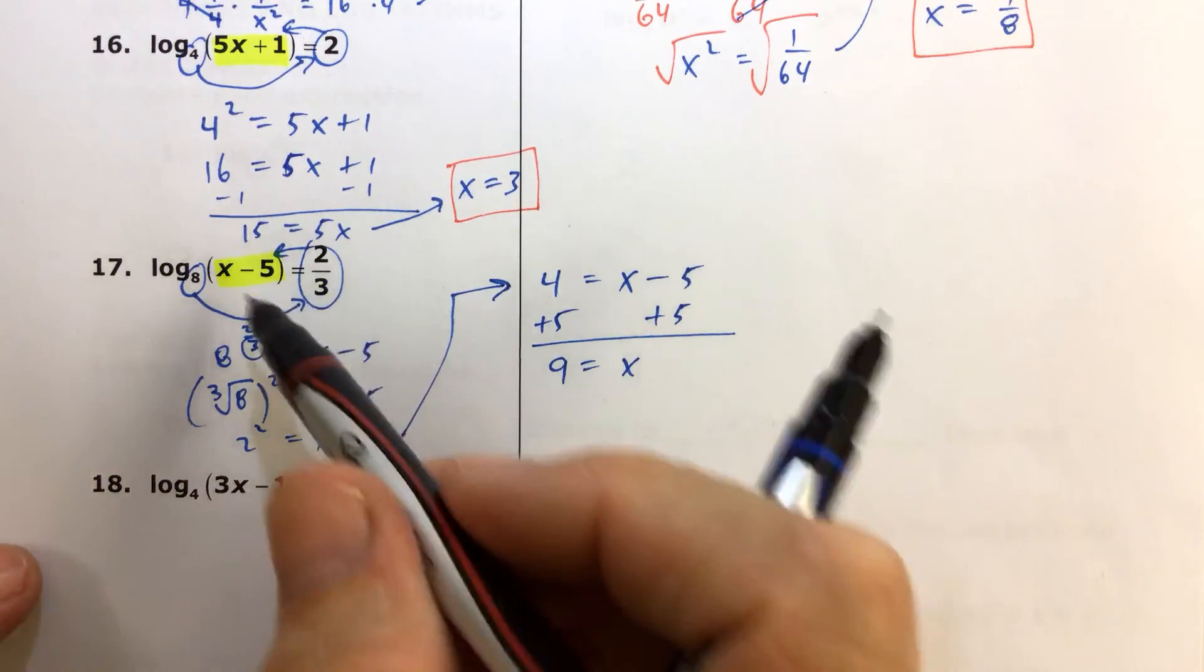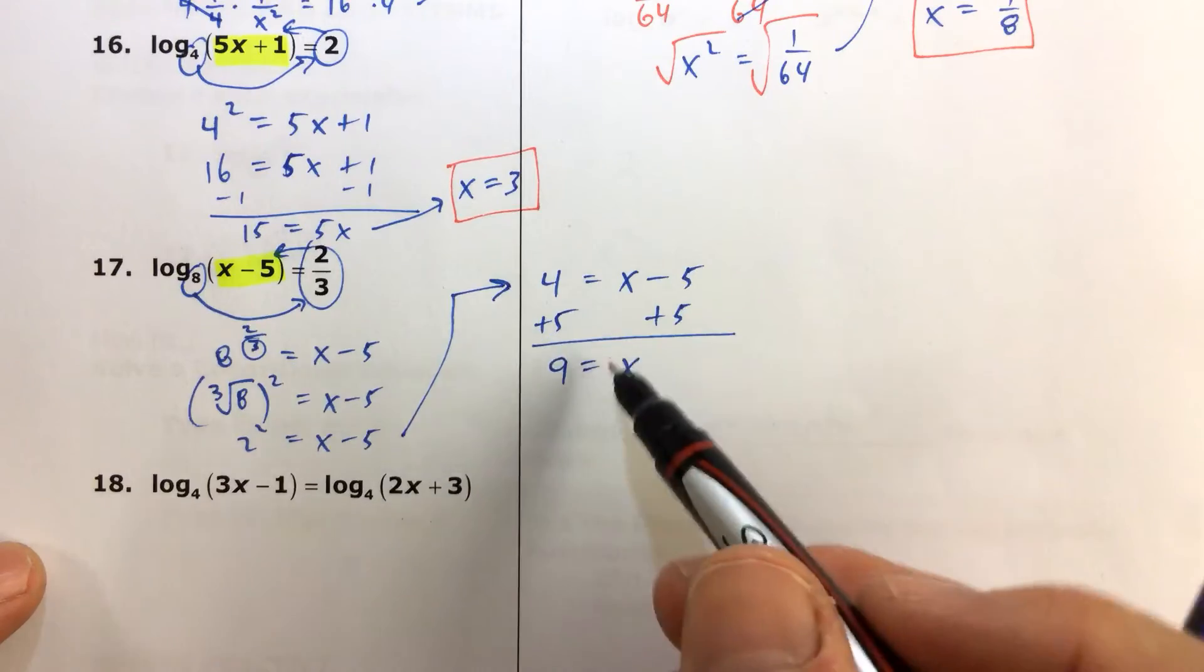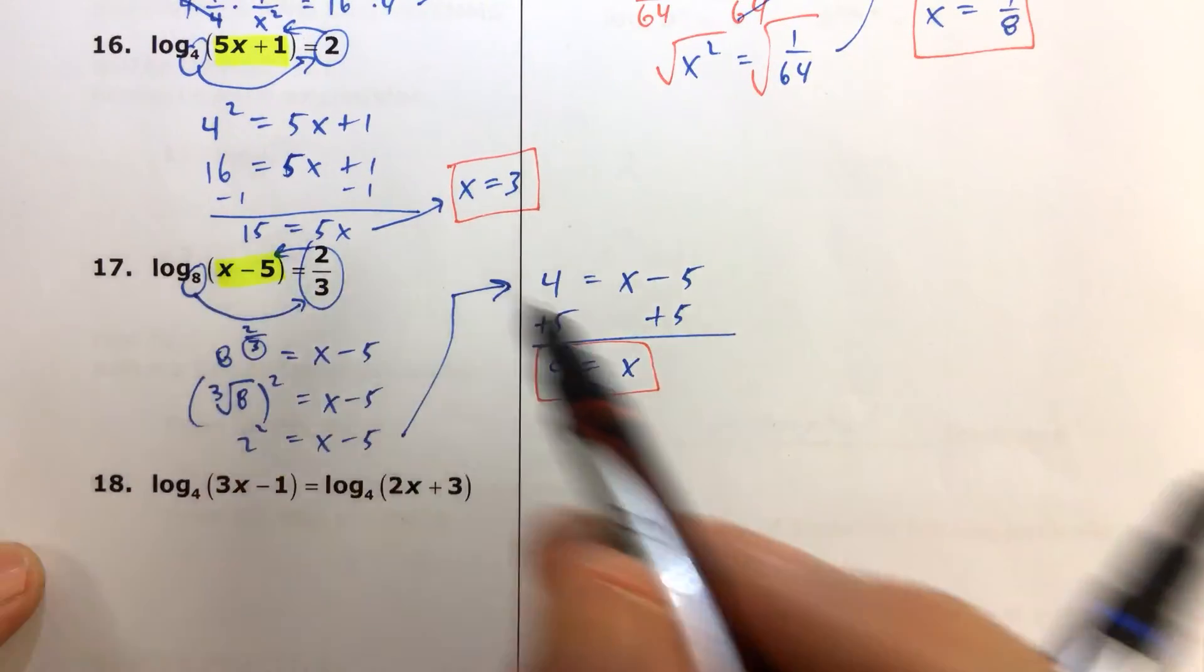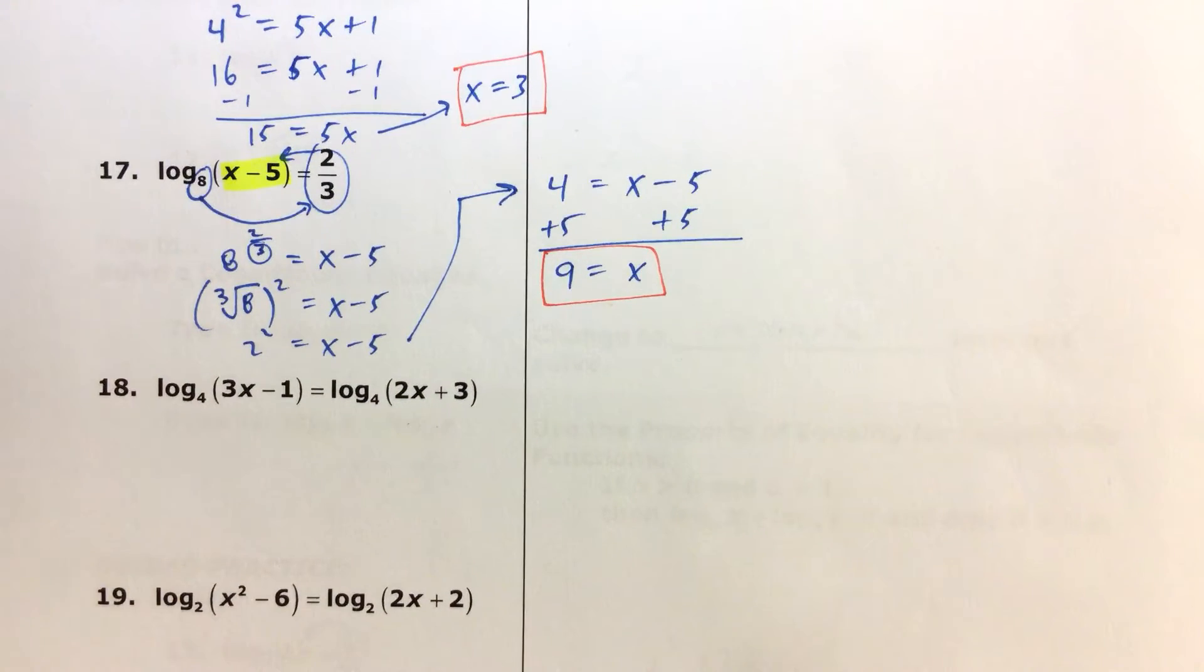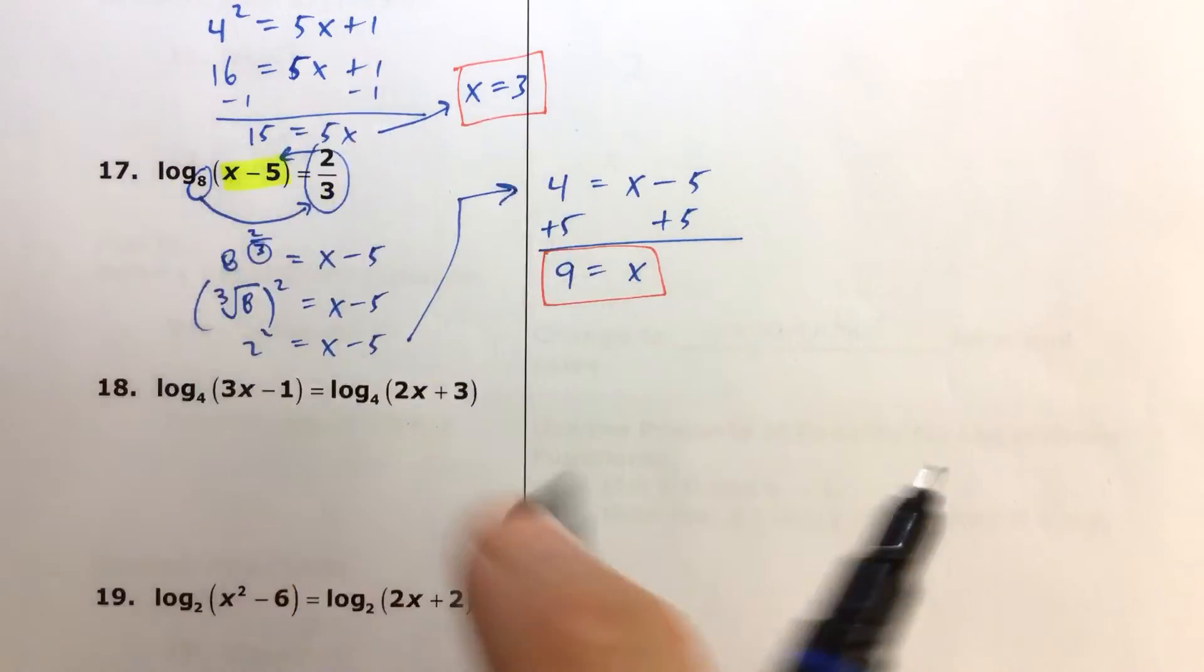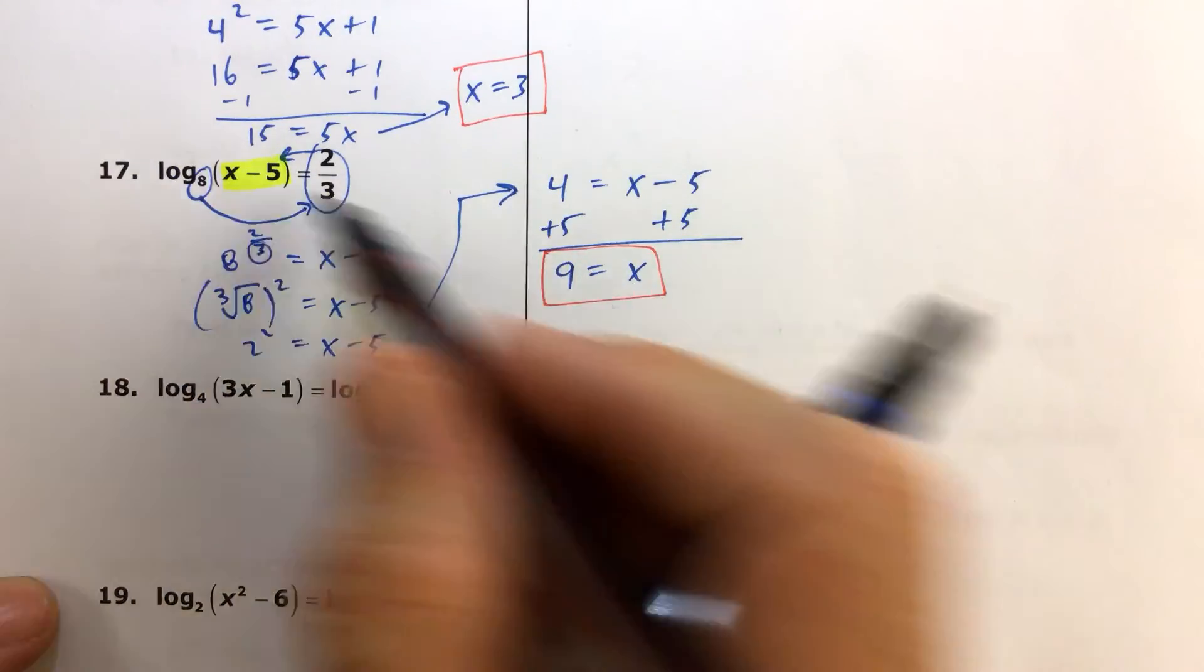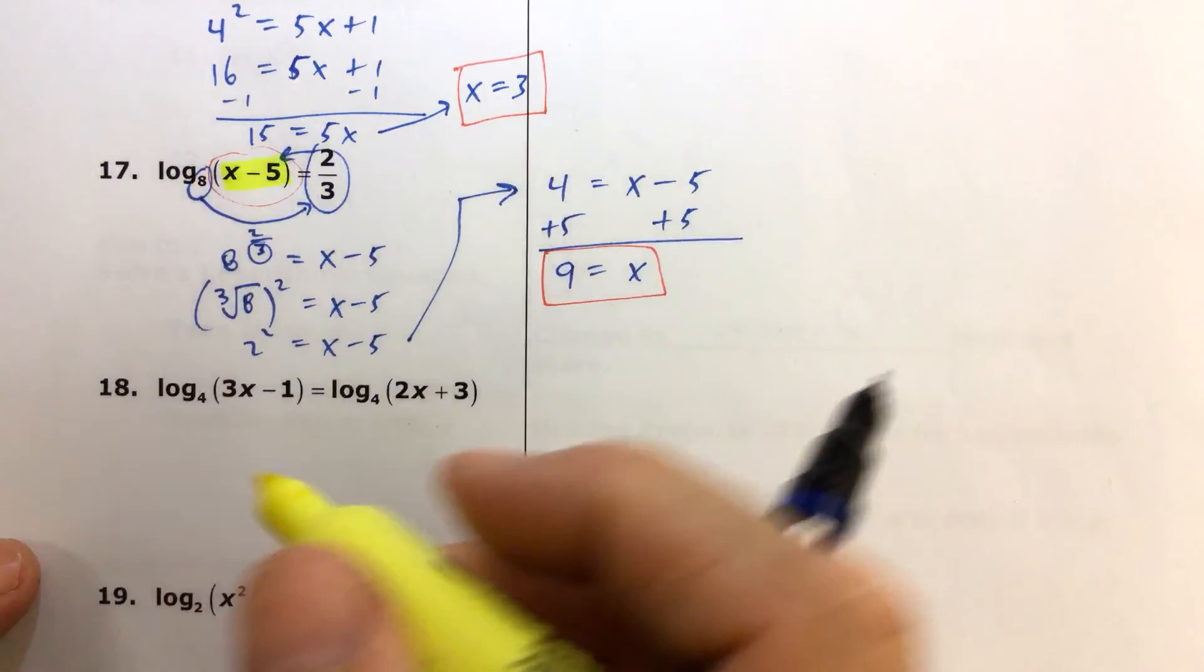And let's eyeball that. But you've got to make sure when you replace x with whatever you get, that you're always taking the log of a positive number. So we'll talk more about that when we talk about the graphs of the log functions. But 9 works, so log base 8 of 4. So we're just going to assume that 9 works, because when you plug 9 in, you're going to get a positive number that you're taking the log of. And again, when we get to graphing logs, we'll talk more about why that's true.